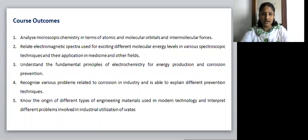The course outcomes of Engineering Chemistry are: at the end of this Engineering Chemistry course, you will be able to analyze microscopic chemistry in terms of atomic and molecular orbitals and also intermolecular forces. You will be able to relate electromagnetic spectra used for exciting different molecular energy levels in various spectroscopic techniques and their application in medicine and other fields. You will be able to understand the fundamental principles of electrochemistry for energy production and corrosion prevention. You will be able to recognize various problems related to corrosion in industry and explain different prevention techniques. You will be able to know the origin of different types of engineering materials used in modern technology and interpret the different problems involved in industrial utilization of water.